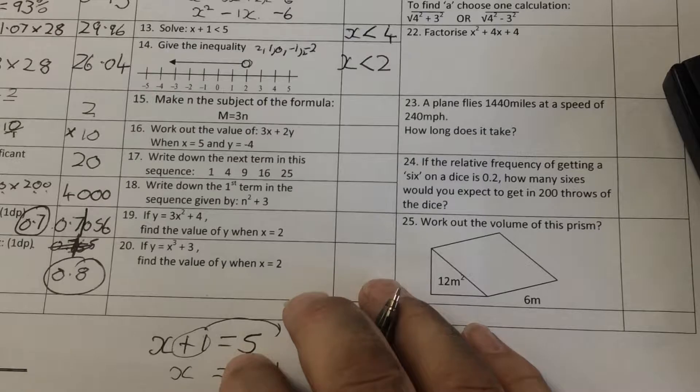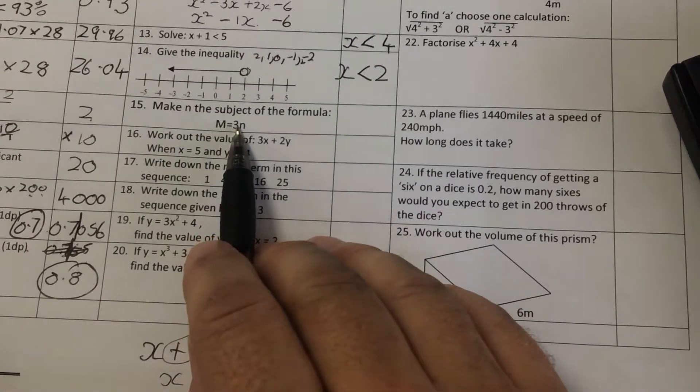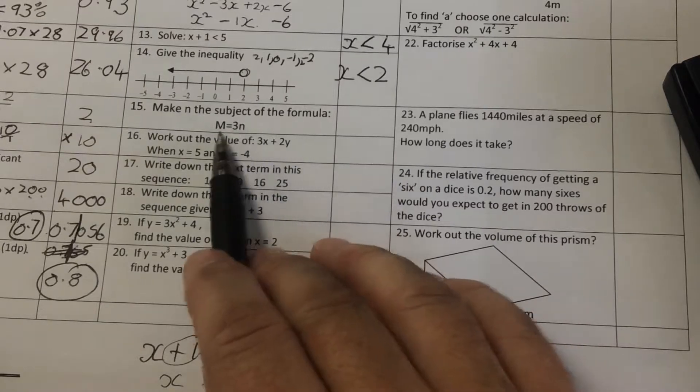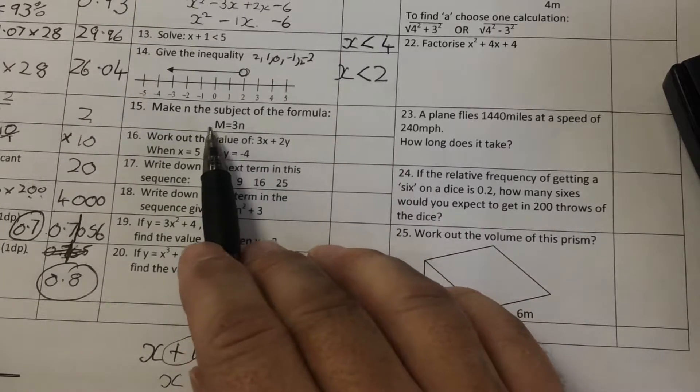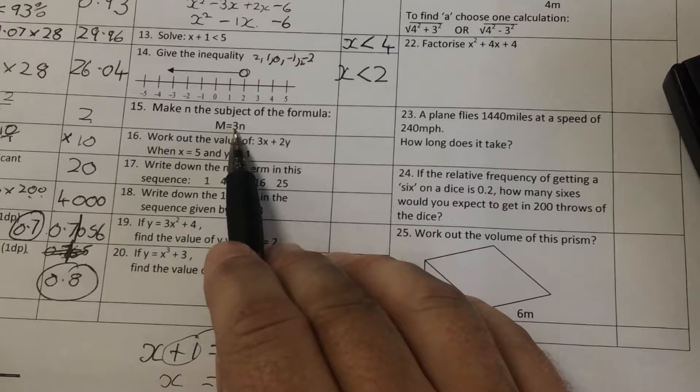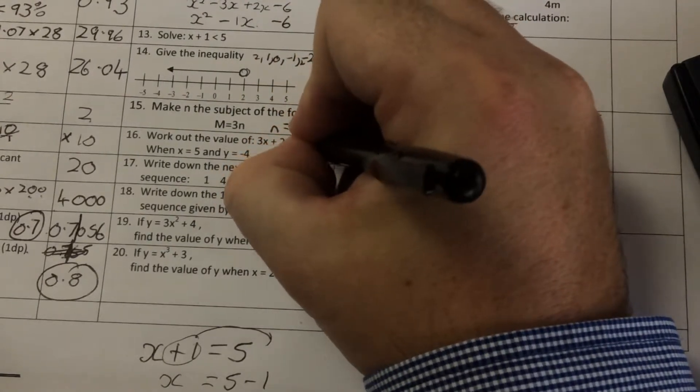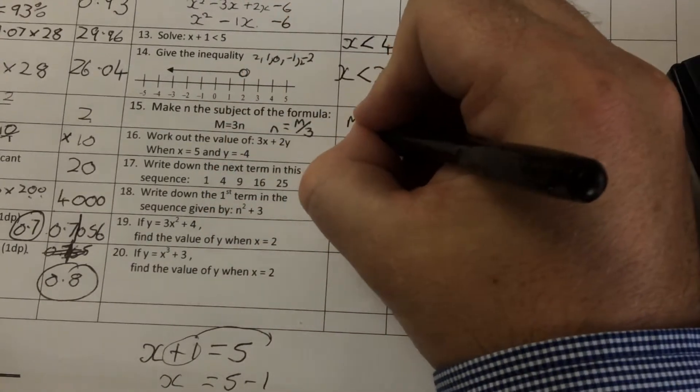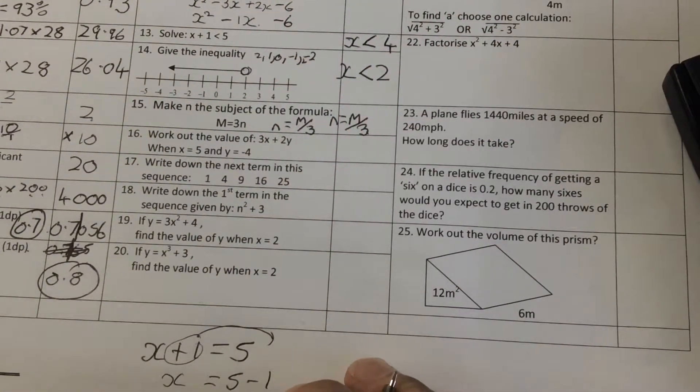Question 15. Make n the subject of the formula. Subject of the formula means you're solving like an equation, but you have letters in there. So I want n on its own. So m is equal to 3 times n. So the opposite of times 3 is divided by 3. So n is equal to m divided by 3. Because the 3 goes over. So n is equal to m divided by 3.